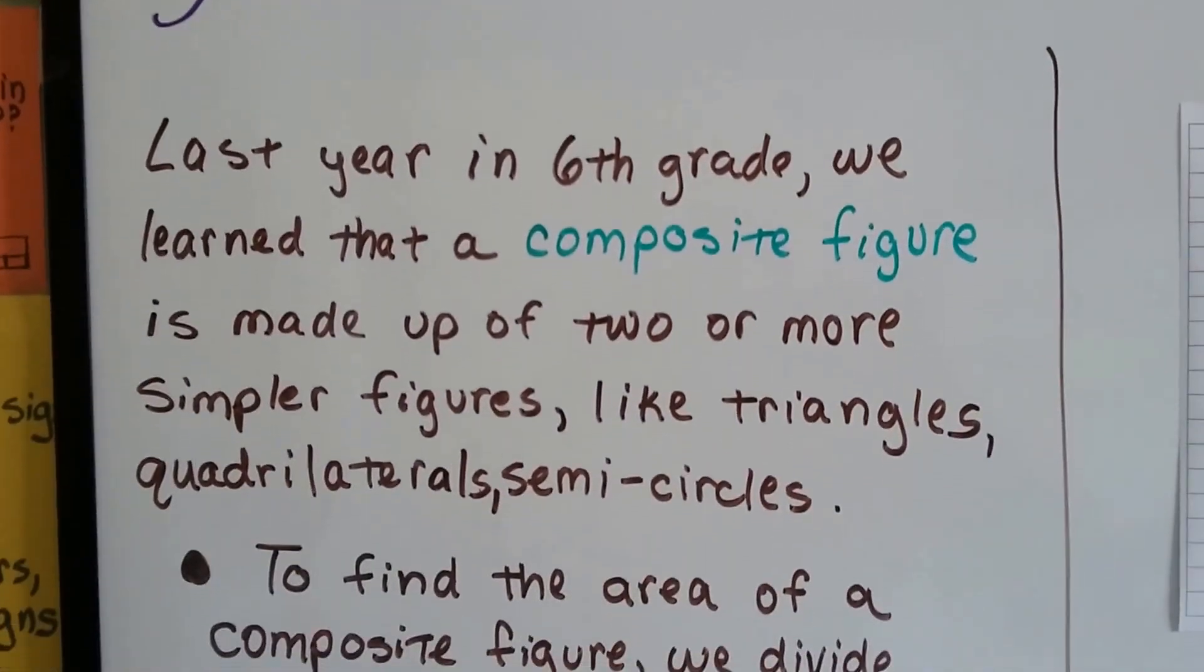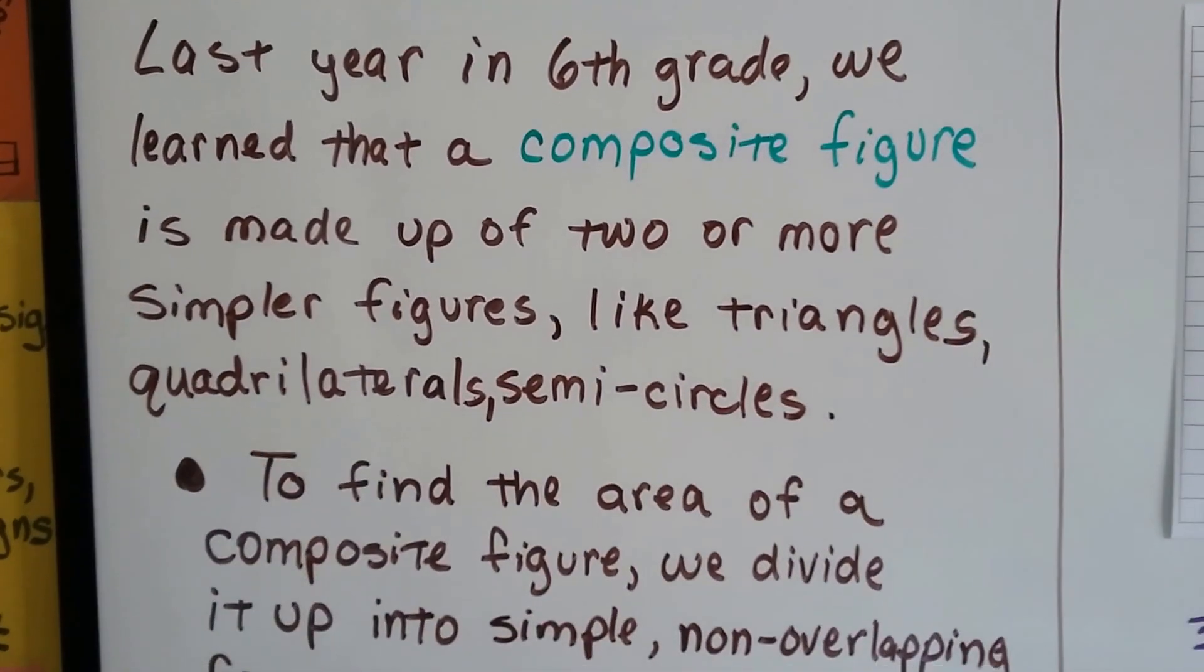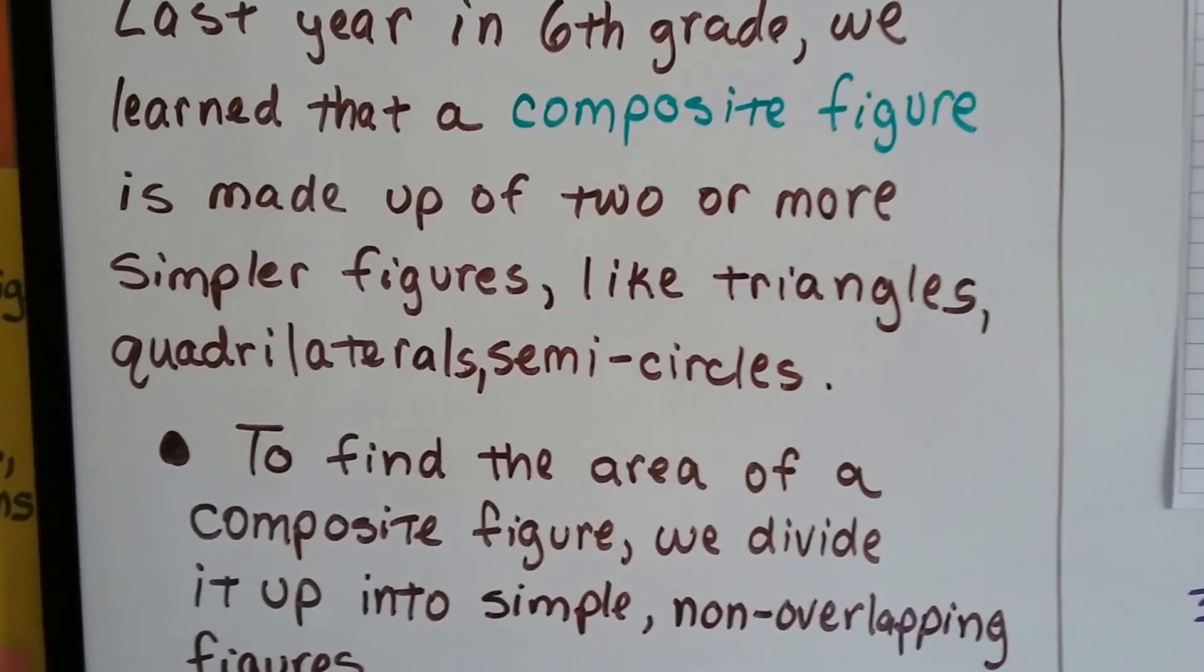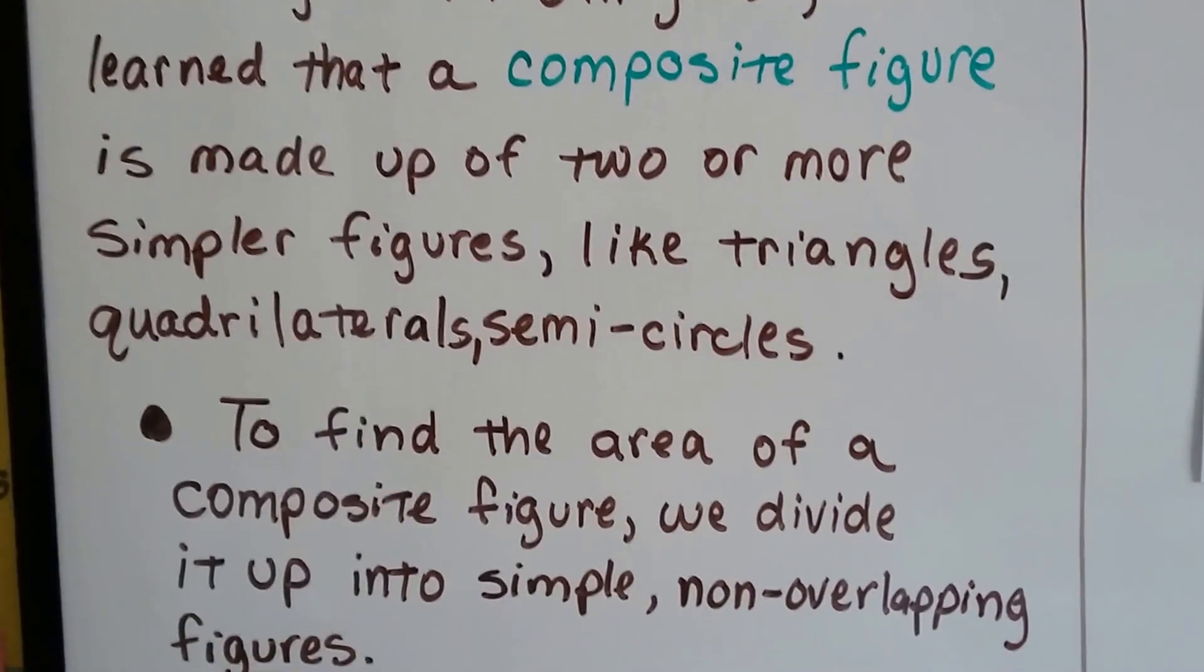Last year in sixth grade we learned that a composite figure is made up of two or more simpler figures, like triangles, quadrilaterals, or semicircles.